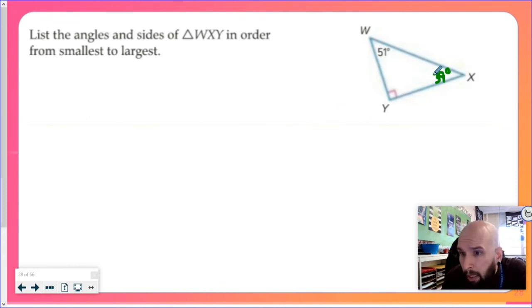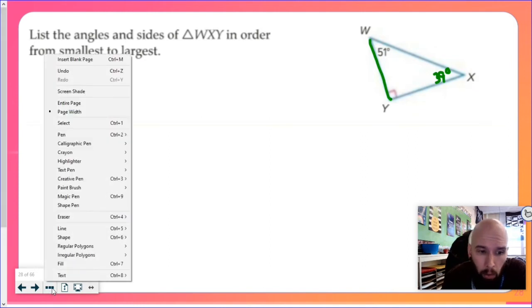Well, that green guy right there is my smallest, which means my smallest side, the opposite side of 39 degrees, is WY. That's my smallest side.